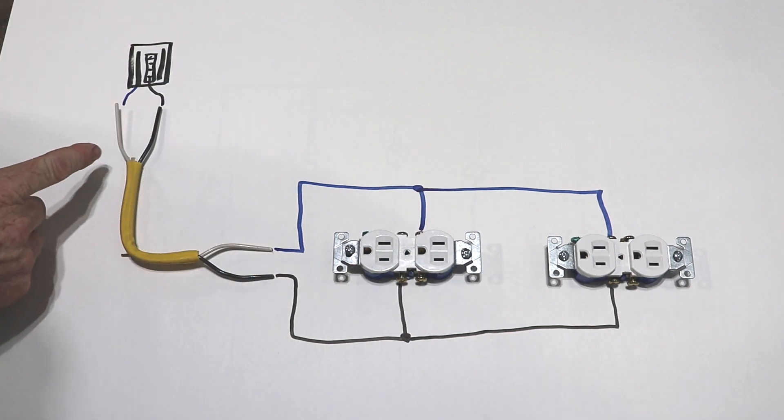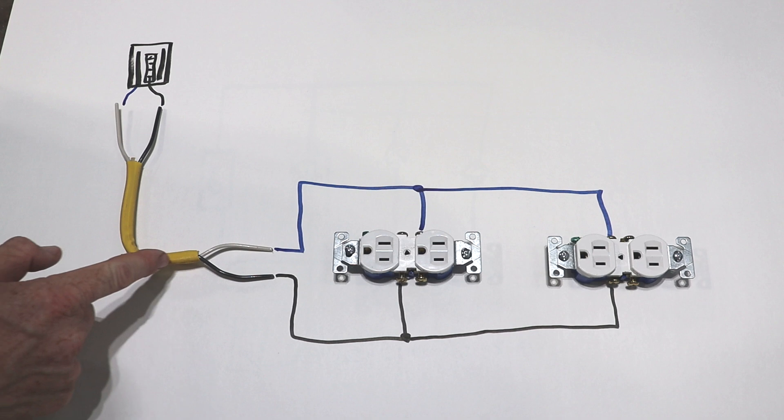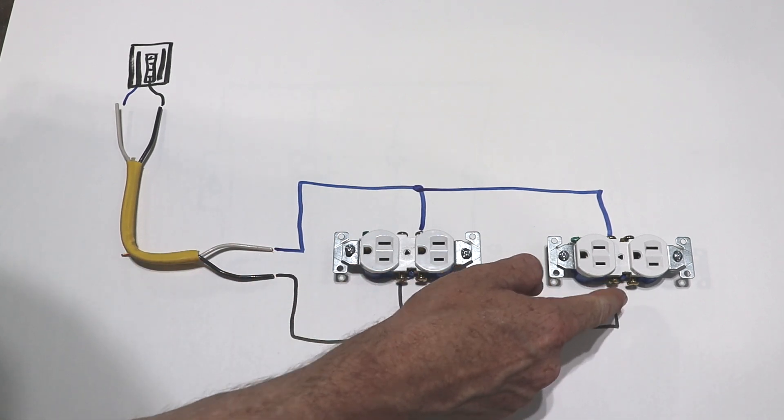So let's follow the path of current. We have the breaker in the panel box providing the power. The power is coming down, going to the first outlet, and it's also going to the second outlet.